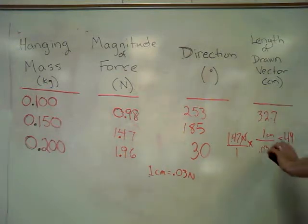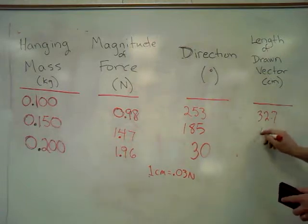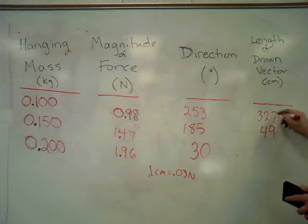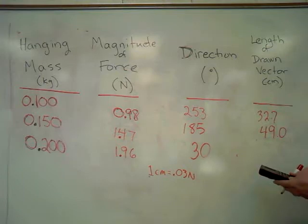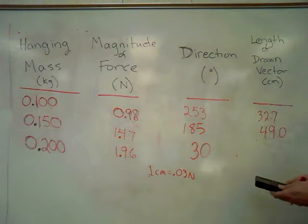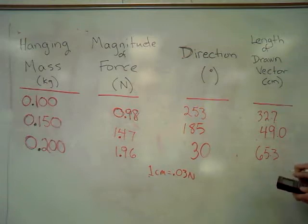Now for the last one, I have 1.96 newtons, 0.03 divided by, and I get 65.3 centimeters. I did it using, well, in both cases, I ended up dividing this by 0.03, because that's equal to one.